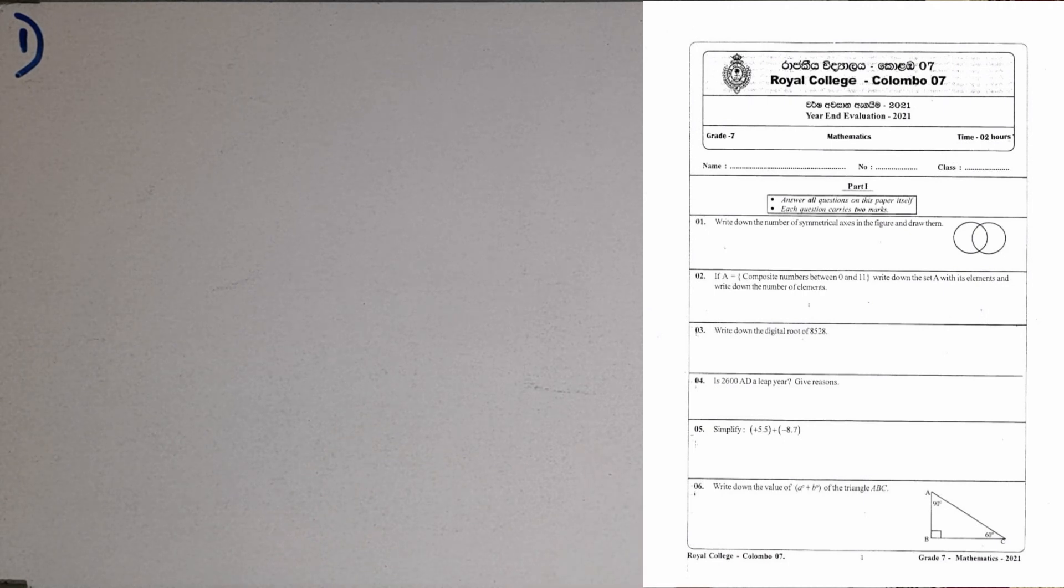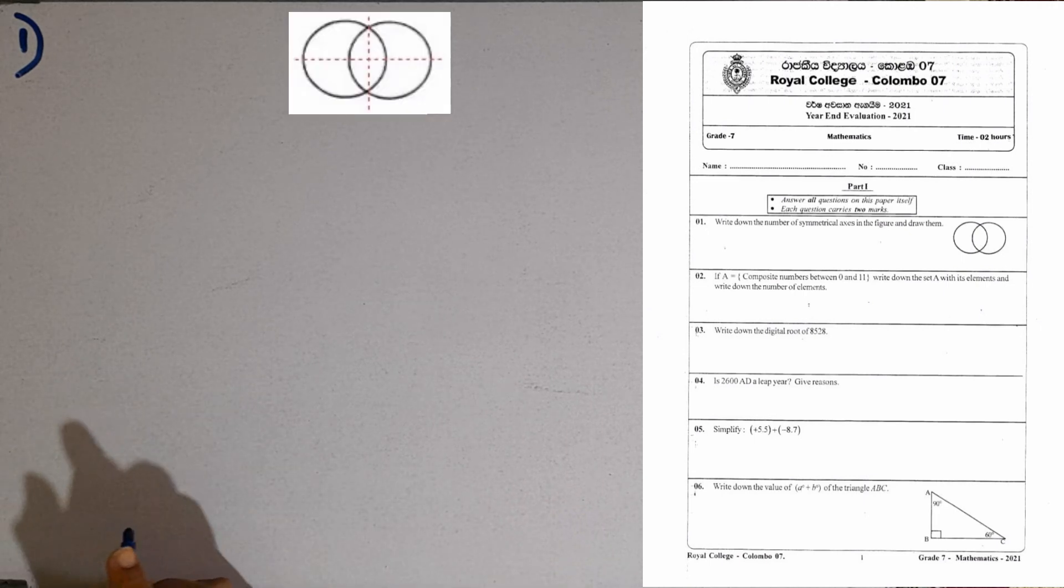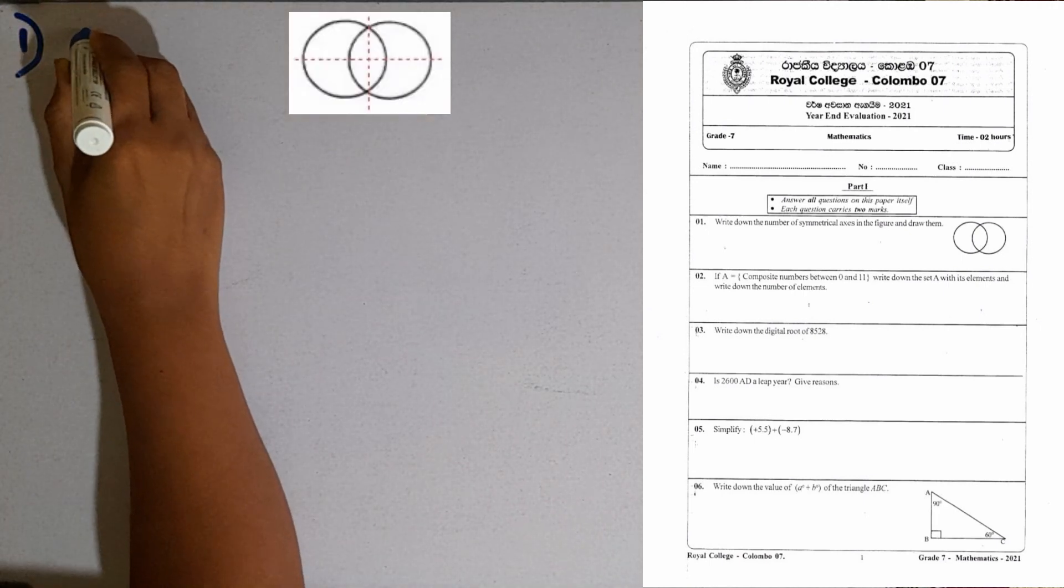Question number 1. Write down the number of symmetrical axes in the given figure and draw them. In this figure, we can have two symmetrical axes like this. So, two symmetrical axes.